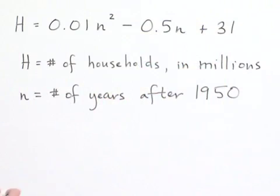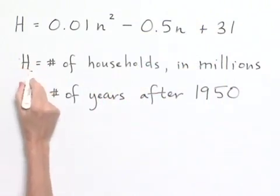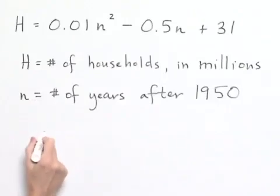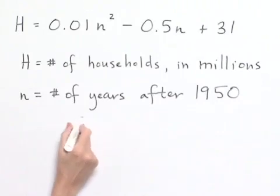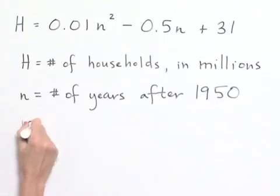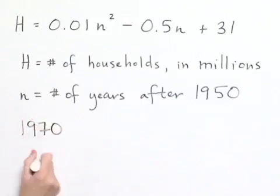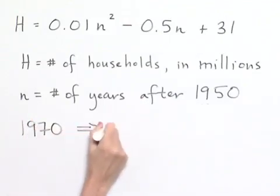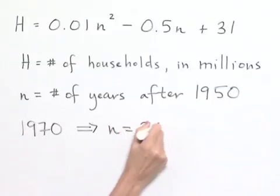Now we want to use the formula given to us in the problem for the number of households in millions to determine whether we have an overestimate or an underestimate using the model. For 1970, which is 20 years after 1950, n equals 20 in our formula.